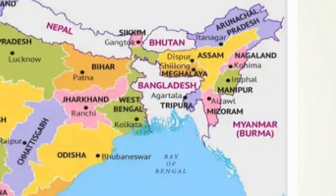On the right side, to learn the remaining Northeast states, remember NMMT: Nagaland on top, then Manipur (MA comes before MI), then Mizoram, and last is Tripura. So AAM — Arunachal Pradesh, Assam, Meghalaya — for the parallel states, and NMMT — Nagaland, Manipur, Mizoram, Tripura — for the right side. That is the trick to learn all the Northeast seven sisters states.